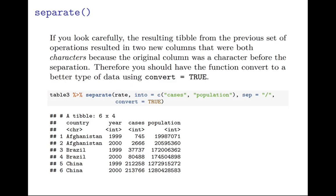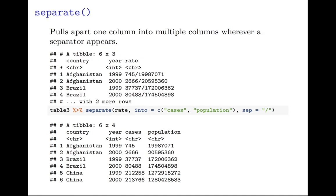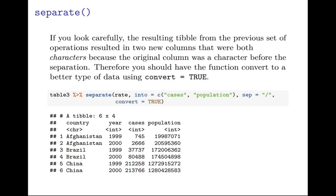If you look carefully, the resulting table from the previous set of operations resulted in two new columns that were both characters, because the original column was a character before the separation. If we go back, you can see on that bottom table that cases and population are actually both characters, even though those values are integers. So if you want to deal with that, what you need to do is add convert equals TRUE to the end of your separate function. Then R is smart enough to know that those are actually integers, and so it will convert them from characters into integers.